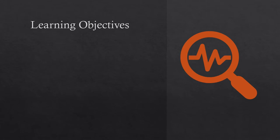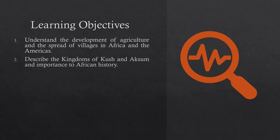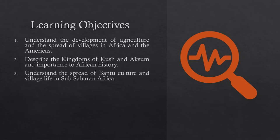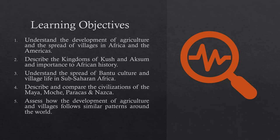The learning objectives for this lecture podcast are: number one, understand the development of agriculture and the spread of villages in Africa and the Americas; number two, describe the kingdoms of Kush and Aksum and their importance to African history; number three, understand the spread of Bantu culture and village life in sub-Saharan Africa; number four, describe and compare the civilizations of the Maya, the Moche, and the Nazca; and number five, assess how the development of agriculture in villages follows similar patterns around the world.